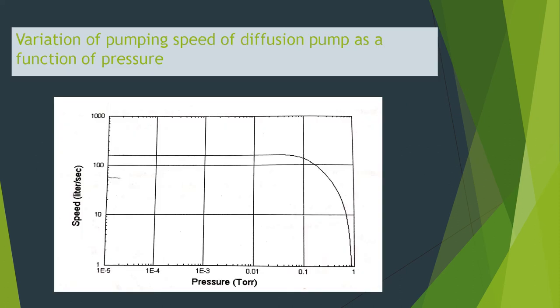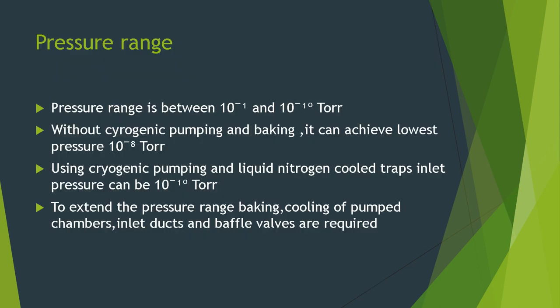This figure shows the variation of pumping speed of the diffusion pump as a function of pressure. When the pressure increases, pumping speed decreases after a particular limit. The operating pressure range is from 10⁻¹ to 10⁻¹⁰ Torr.